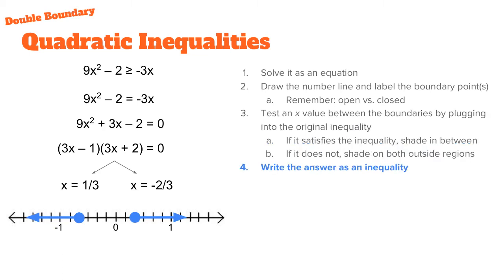Now our final step is to write the answer as an inequality. We have two separate regions, not just a single one in between, but two separate regions. So any x value that works in this original problem will either be to the left of this left boundary or to the right of the right boundary. And so that's why the inequality statement is an or statement.